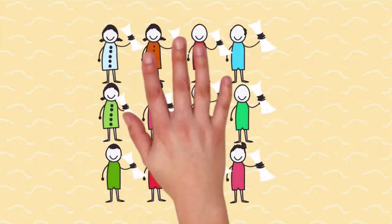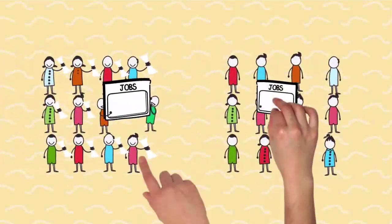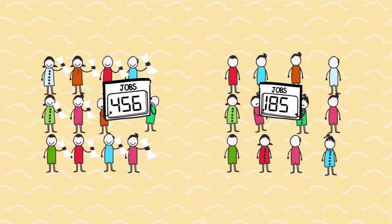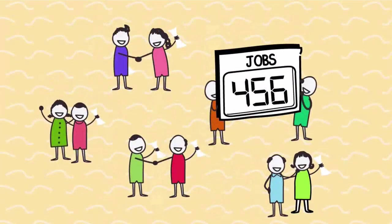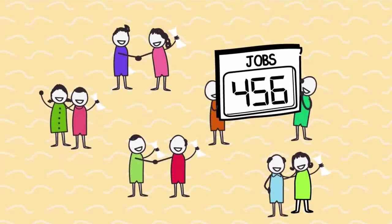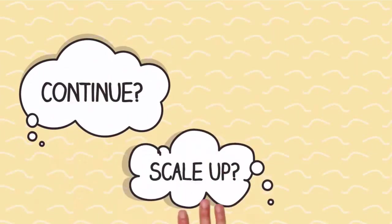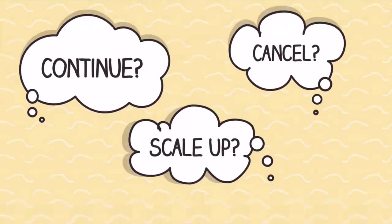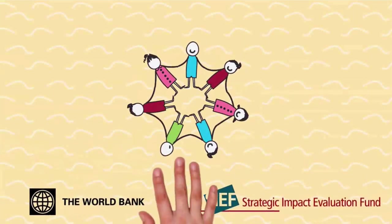These people get the training program, but these people don't. If the job outcomes here are better than those here, we can reliably attribute that to the program. Using a randomized impact evaluation, we know how effective our program is and can make good, cost-effective decisions about future programs to reduce extreme poverty and build shared prosperity.